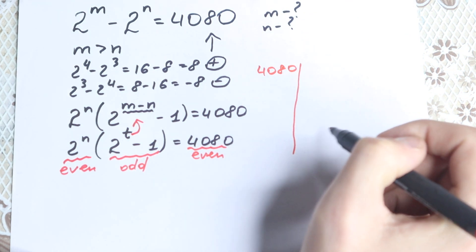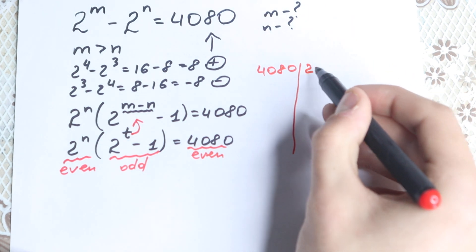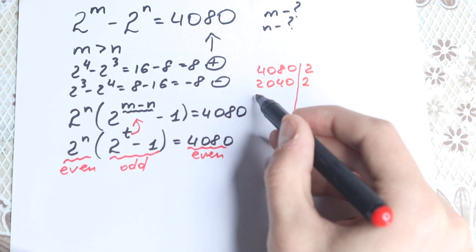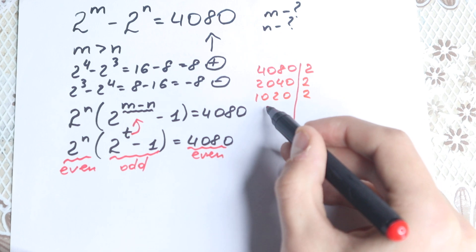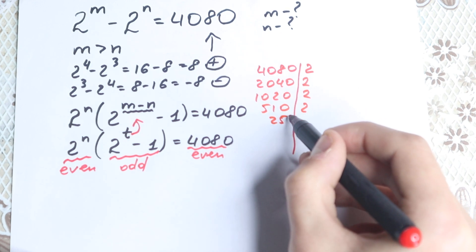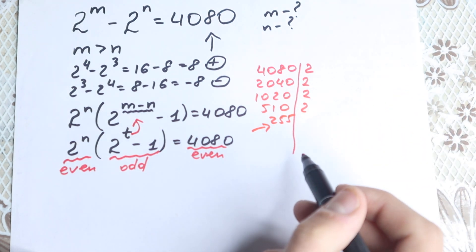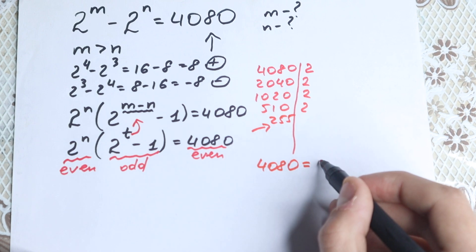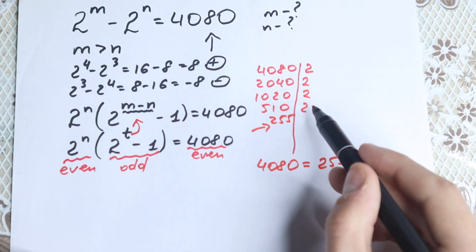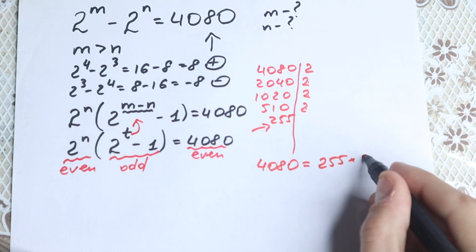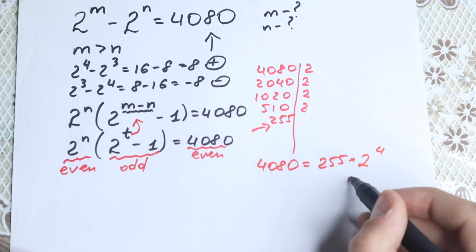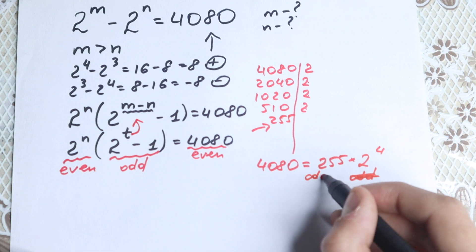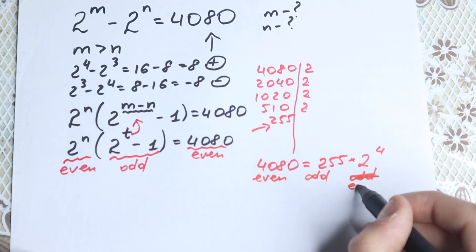How can we rewrite 4080 as a product? If we divide by 2 we get 2040, then 1020, then 510, then 255. So 255 is an odd number, which is great. We can rewrite 4080 as 255 times 2 to the fourth power. So 255 is odd, and 2 to the fourth is even.